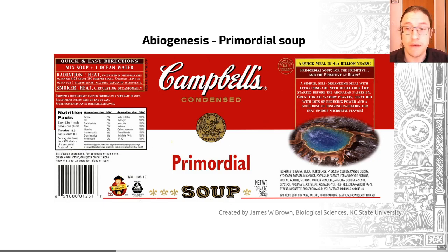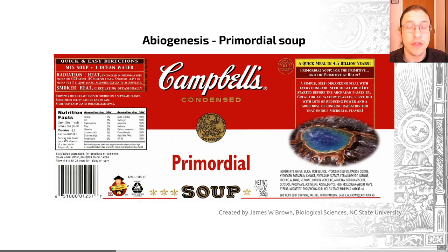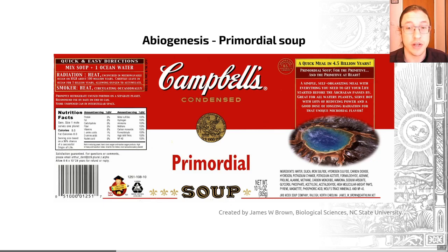The key thing here is: if you have molecules with functions, as soon as one becomes capable of catalyzing self-replication, suddenly you have a situation in which evolution can occur. Even if only a tiny fraction of the molecules present were capable of catalyzing their own replication, they would become increasingly abundant because they would be helping to create more of themselves. That could lead to primitive biochemistry and essentially an evolutionary cascade which started off all of the processes we see today.